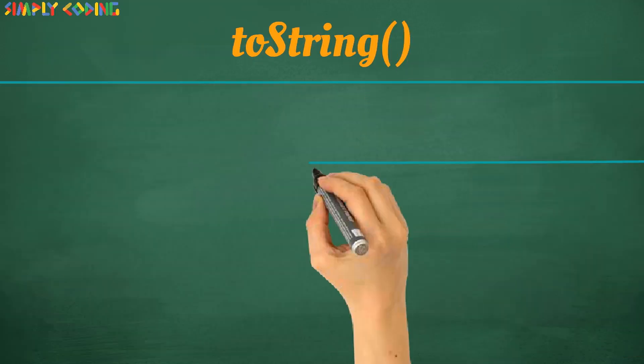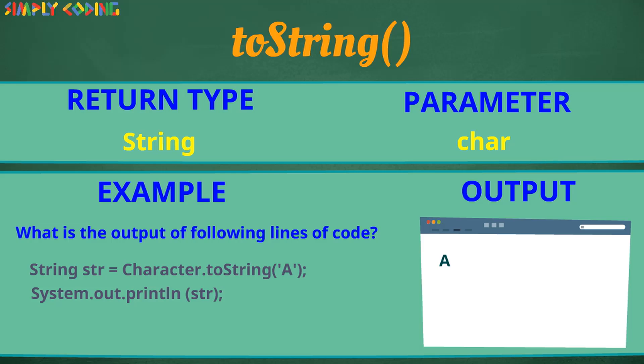Character class also has toString method which is used to convert from character into string class. Here the data type has changed from character to string.